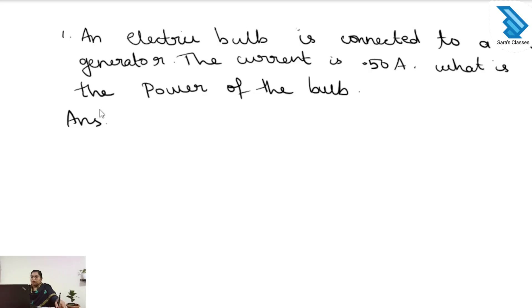Welcome to Sarah's class. Today we are discussing problems related to electric power and Joule's law of heating. So we can go to the topic. The first problem: an electric bulb is connected to a 220 volt generator. The current is 0.50 ampere. What is the power of the bulb?